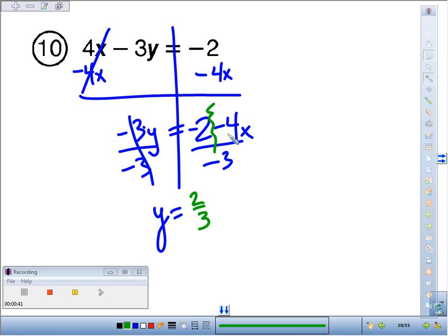And negative 4 divided by negative 3. Again, a negative divided by a negative is a positive, and 4 thirds doesn't simplify, so we just leave it as 4 thirds x.